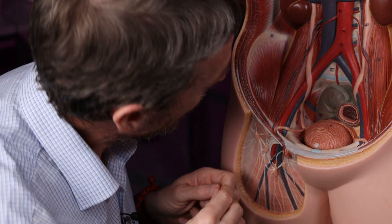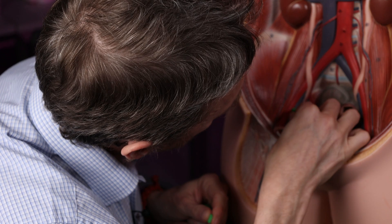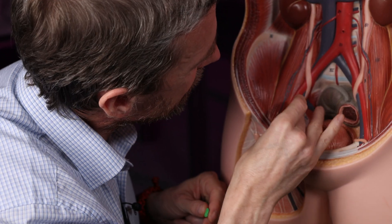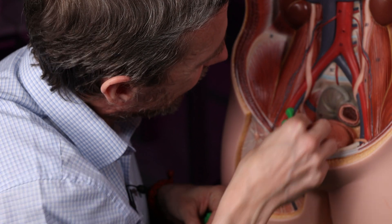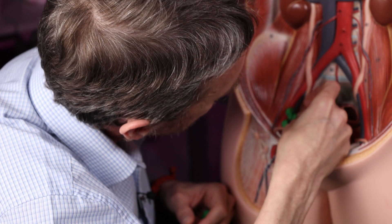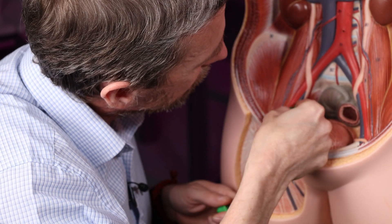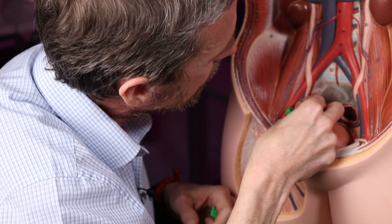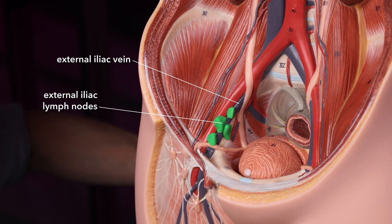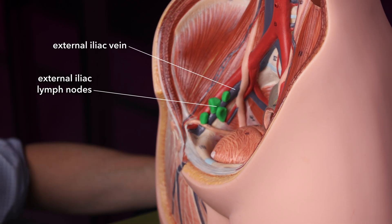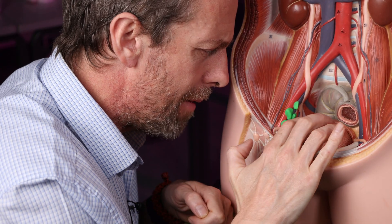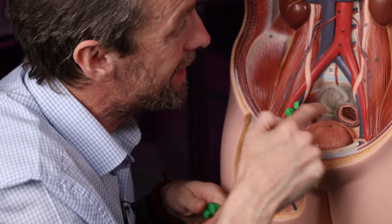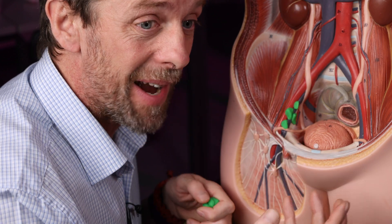The deep inguinal lymph nodes are going to drain to the external iliac lymph nodes. Imagine these lymph nodes are all around the blood vessels, not just on the surfaces I can get to. So these green ones — these are the external iliac lymph nodes. Not only are they receiving lymph from the deep inguinal lymph nodes, but they're also receiving lymph from the organs of the pelvis that are most anterior and midline. In a male pelvis that includes the bladder, and also the uterus in a female, and the prostate — which tends to drain to everything, as we'll see.